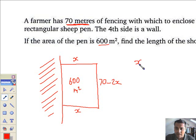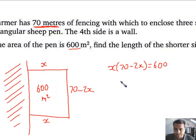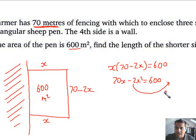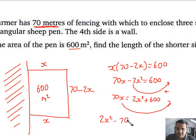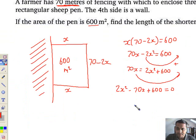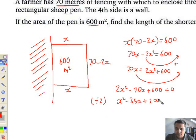I've got x multiplied by 70 minus 2x comes to 600. Multiplying out, 70x minus 2x squared equals 600. Bringing the minus 2x squared over and adding, I've got 70x equals 2x squared plus 600. Bringing over the 70x's, I have 2x squared subtract the 70x's plus my 600 equals 0. Dividing through by 2 to find a more simplified quadratic, I have x squared minus 35x plus 300 all comes to 0.